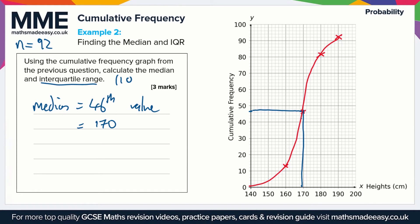And then for the interquartile range, which is sometimes called the IQR for short, we need the values that are a quarter of the way into the data set and three quarters of the way into the data set. So that's going to be n over 4, so 92 divided by 4 is 23, and 3n over 4, which is going to be 3 times this value of 23, which is 69. So we're looking for the 23rd value.